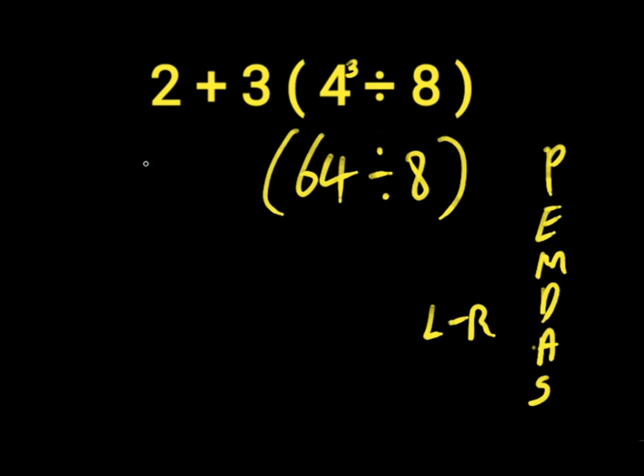Then we bring down our 2 plus 3. So 64 divided by 8 will give us 8. Then we have 2 plus 3 times 8. So we solve our multiplication before we solve the addition because it comes first.